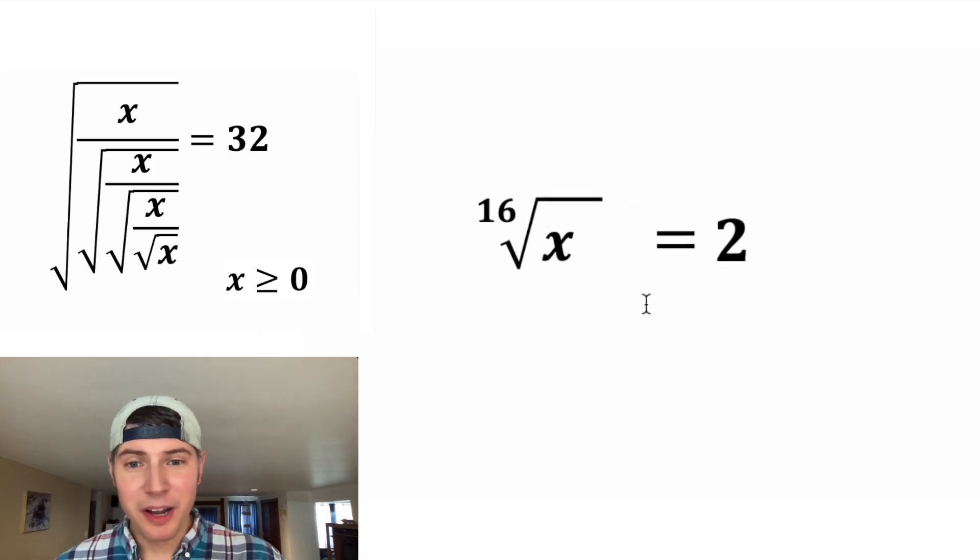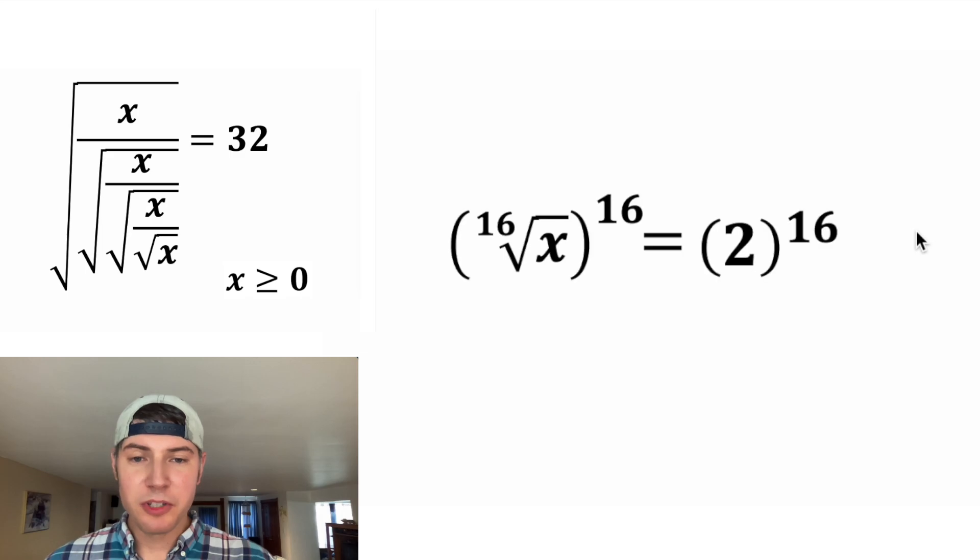And now to get x all by itself, we want to get rid of this 16th root. We're going to do both sides of the equation to the 16th power. This 16 exponent and the 16th root will cancel each other out, so we just have x.